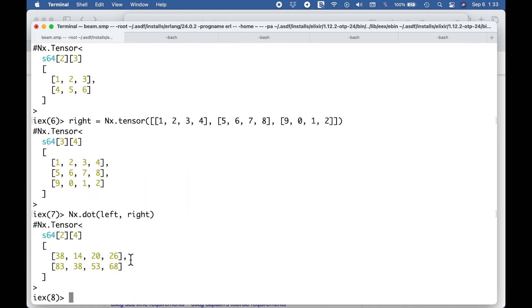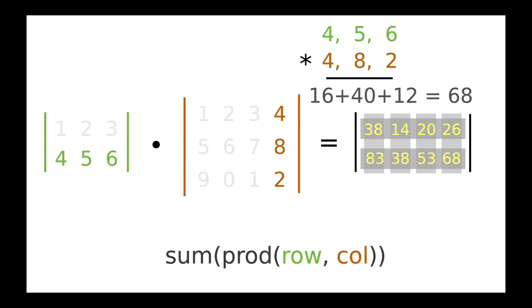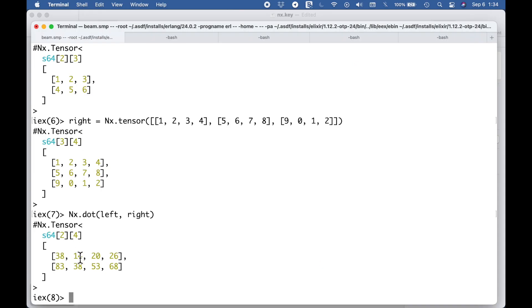I remember that 38 and the 20, so I think we're looking pretty good. And I'm going to go ahead and bring up the other diagram. So let's see: we got 38, 14, 20, 26, 83, 38, 53, and 68. Let's see how we did. 38, 14, 20, 26, 83, 38, 53, and 68. So our math is correct.